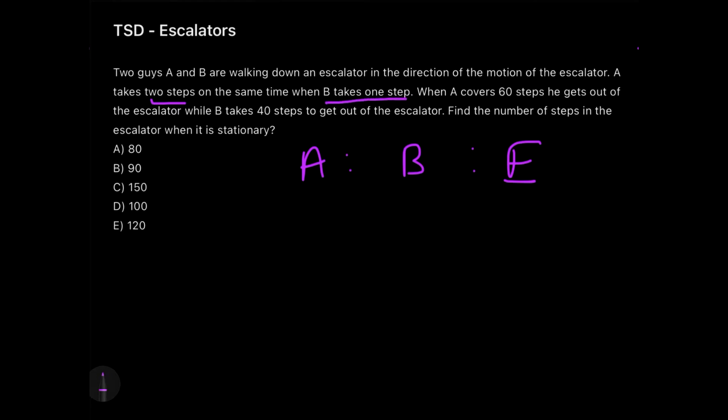The first condition given is that A takes two steps at the same time when B takes one. This is basically the comparison of their distances traveled or their speed. So that means if A is taking two steps, B is taking one step. So this in itself is quite a good comparison.